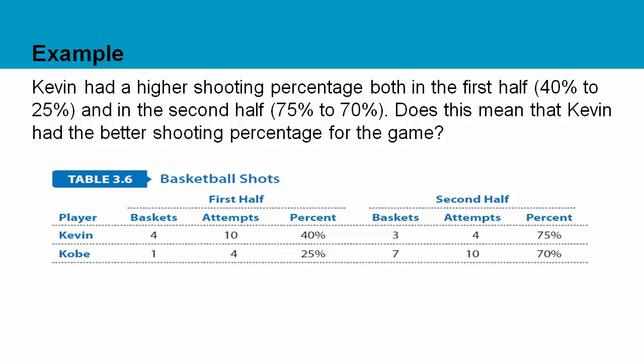Let's look at our first example. We have basketball shots in the first half and second half of the game. If someone just told you that Kevin had a higher shooting percentage both in the first half — 40% to 25% — and in the second half — 75% to 70% — does this mean that Kevin had the better shooting percentage for the game? No, because we don't know how much each player shot. We just have percentages. If you try to compare percentages, it's like averaging percentages, and you can't do that.